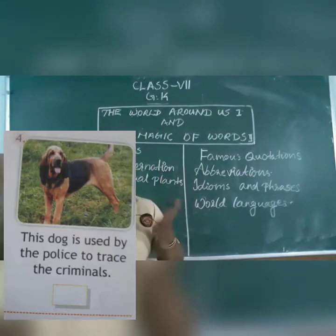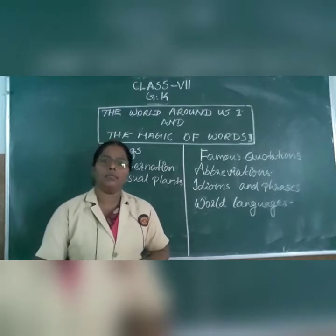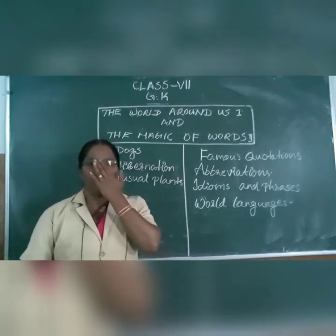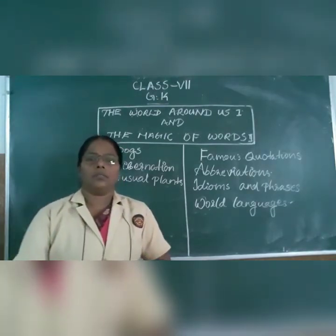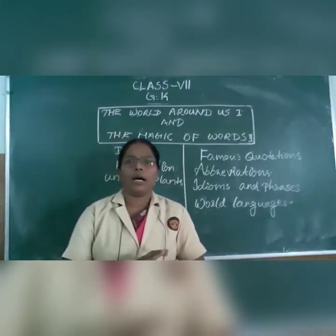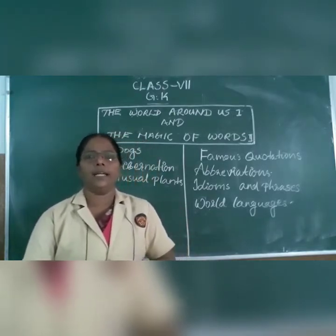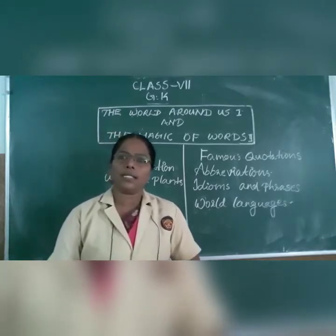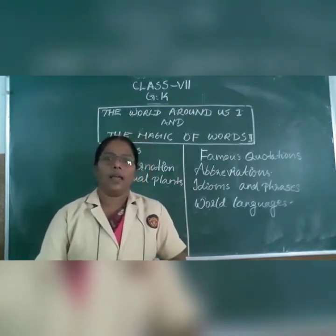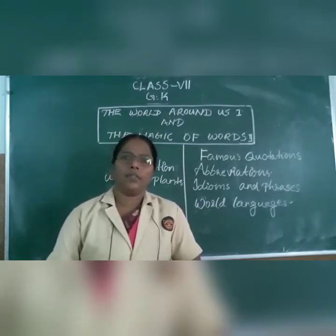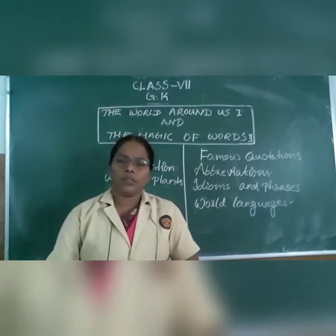Students, look at columns A and B. Match the dog breeds with the countries of their origin. One side is named after the dog and the other side is named after the country. The answer key is given on the last page. Read the book carefully. This topic is very easy.